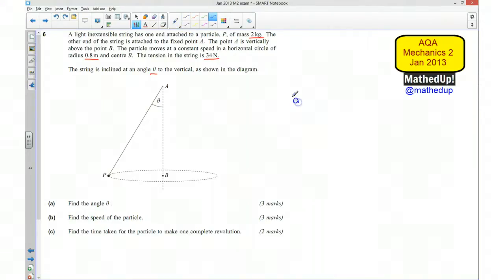So for part A I need to work out what this angle theta is. I'm going to start off by drawing myself a force diagram. I will have my particle with a weight going downwards which is mass times gravity, so 2g newtons. And we have tension in the string of 34 newtons.